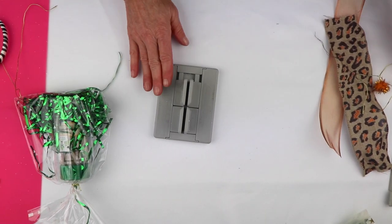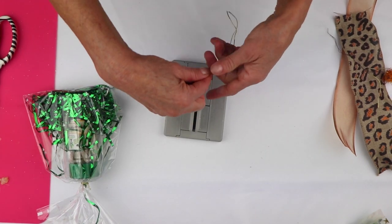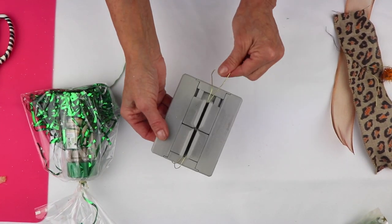I'm going to take my mini Bowdabra, I'm going to take some Bowdabra Bow Wire, which I folded it in half and lay it down into my mini Bowdabra and tuck the ends underneath.